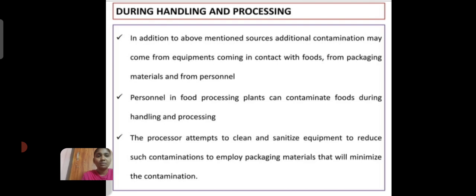In addition to the above mentioned sources, additional contamination may come from equipment coming in contact with food, from packing material, and from personnel. Personnel in food processing plants can be a source of contamination during handling and processing. Processors attempt to clean and sanitize equipment to reduce such contamination, and to employ packing material with minimum contamination. Thank you.